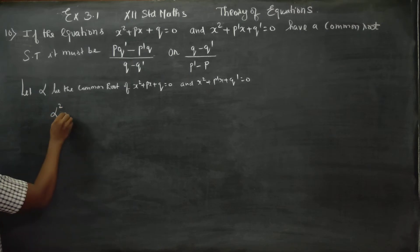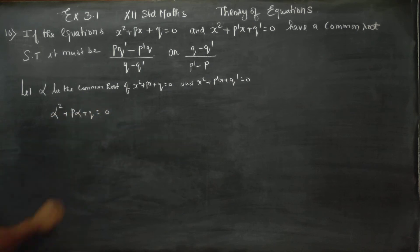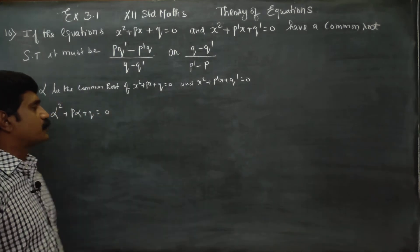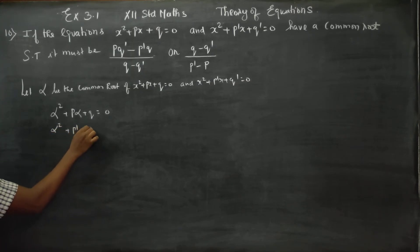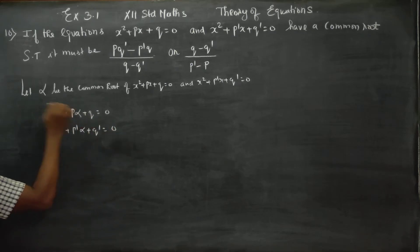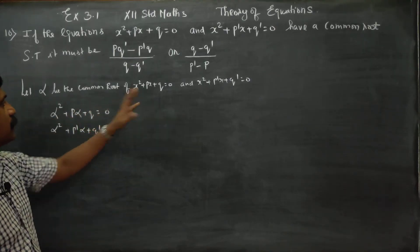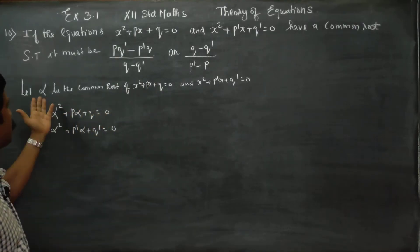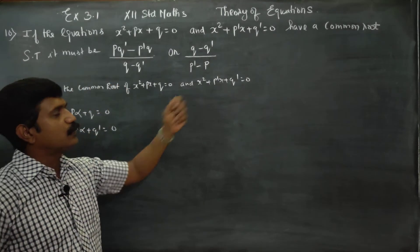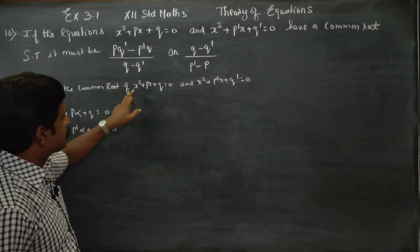Since alpha is the common root, we substitute: alpha squared plus P·alpha plus Q equals 0, and alpha squared plus P-dash·alpha plus Q-dash equals 0. These are the two equations formed. Therefore, you can conveniently substitute the value of alpha instead of x.